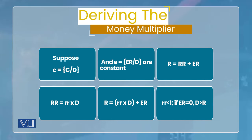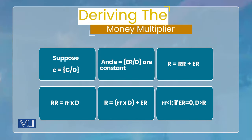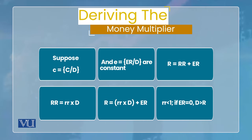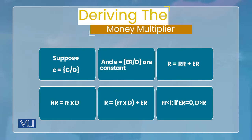ہمیں یہ پتہ ہے کہ total reserves = required reserves + excess reserves۔ اور جو required reserves ہیں وہ required reserve ratio (rr) multiplied by D (deposits) کے equal ہوتے ہیں۔ تو total reserves = (rr × D) + excess reserves۔